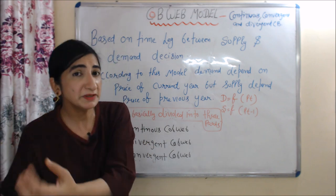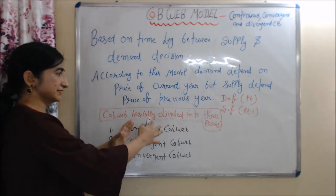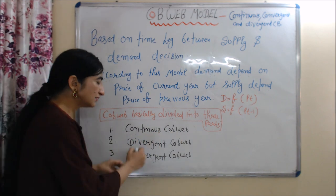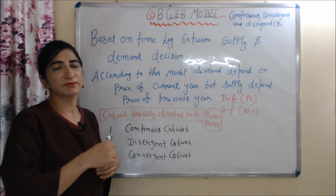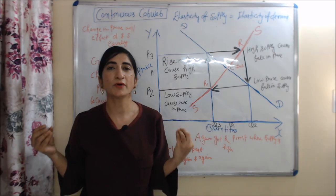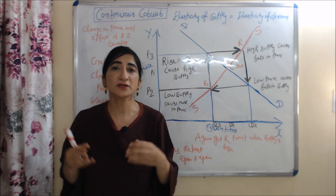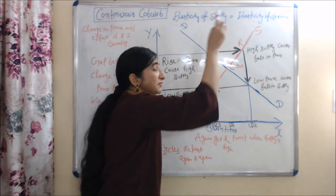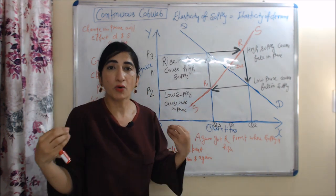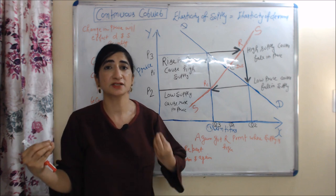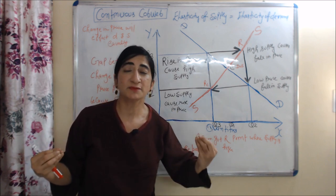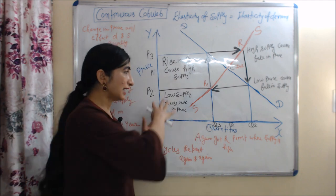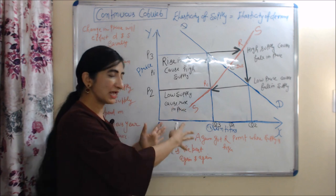The Cobweb Model is basically divided into three parts: continuous cobweb, divergent cobweb, and convergent cobweb. We will discuss each one by one. Firstly, continuous cobweb means where elasticity of supply is equal to elasticity of demand, or we can say that in the case of continuous cobweb, a change in price will affect demand and supply equally.